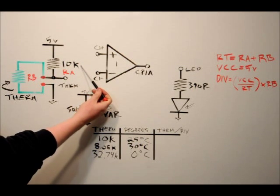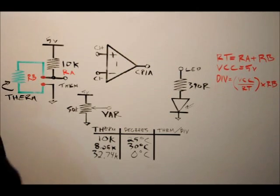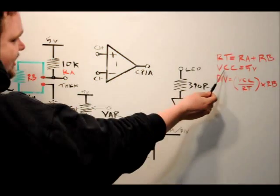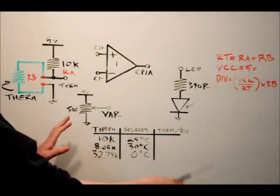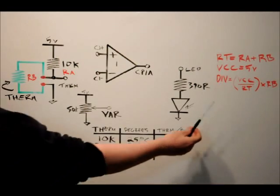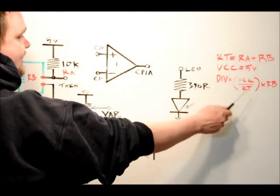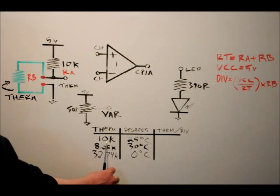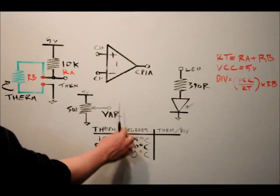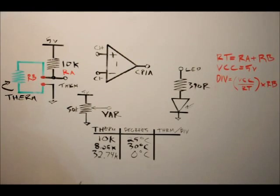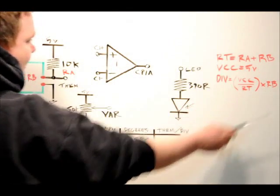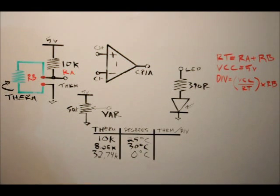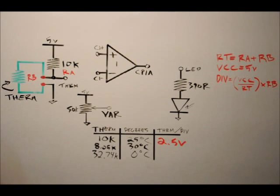So we have essentially a voltage divider, except the thermistor has a variable resistance depending on the temperature in degrees Celsius. Consider the 10k fixed resistor as RA and the thermistor as RB. R total equals RA plus RB. VCC is 5 volts. The division is: div equals VCC over R total, multiplied by RB. For our first example, the thermistor is at 10k ohms at 25 degrees, so RT is 20k. Five volts over 20,000 times 10,000 gives 2.5 volts.